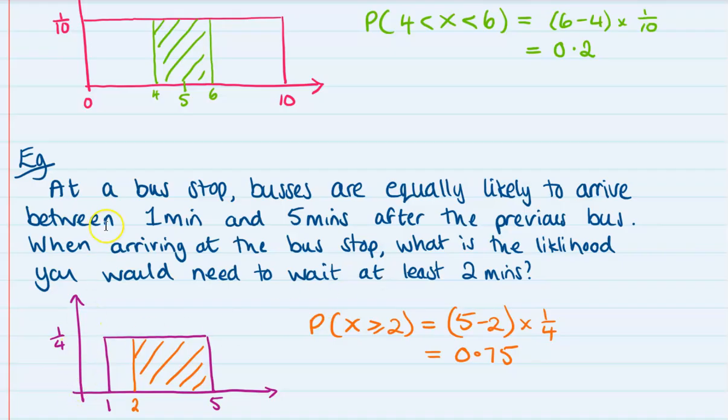Here we've got one that doesn't start at zero. At a bus stop, the buses are equally likely to arrive between one and five minutes after the previous bus. When arriving at the bus stop, what is the likelihood you would need to wait at least two minutes? So if it's going from one to five, that's a base of four.